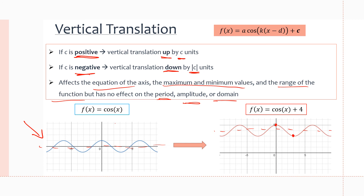Our maximum and minimum values change to five and three, up from one and negative one. The range becomes f(x) is greater than or equal to three and less than or equal to five. Our domain doesn't change, our period is the same, and our amplitude is still one.